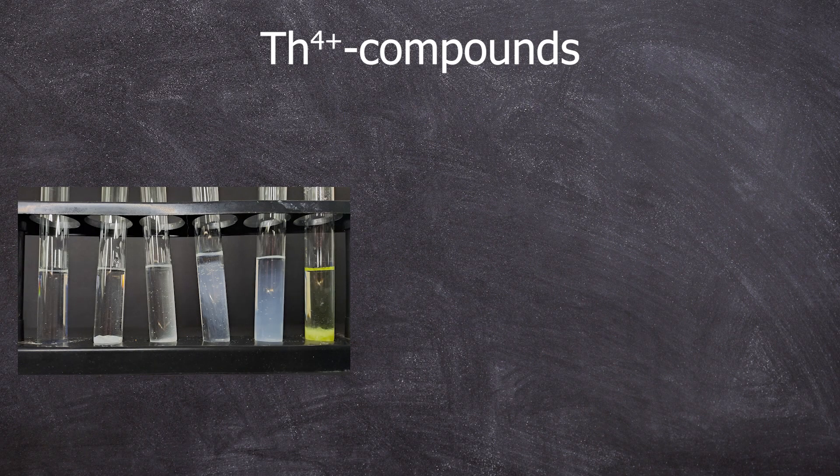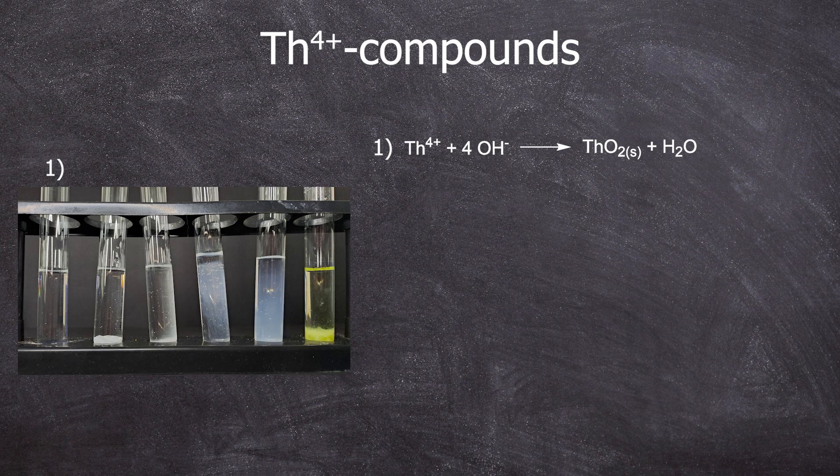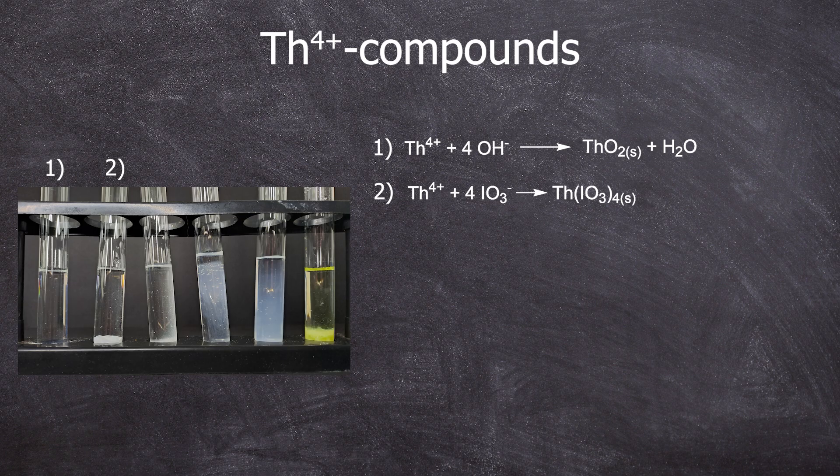Here is what was prepared in each test tube. To the first test tube we prepared thorium oxide with sodium hydroxide. In the next test tube thorium iodate was precipitated, a crucial detection method for thorium.